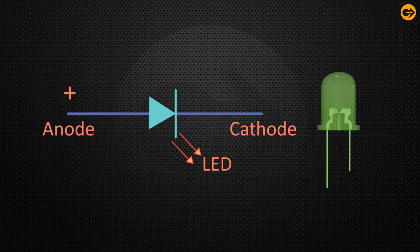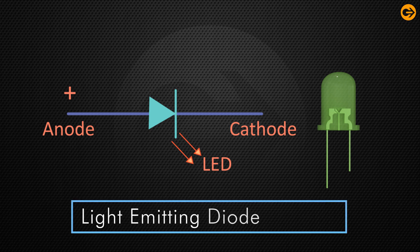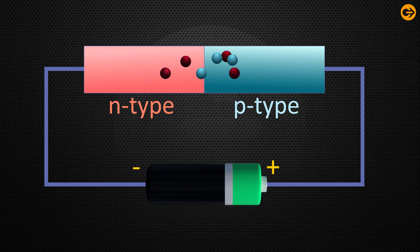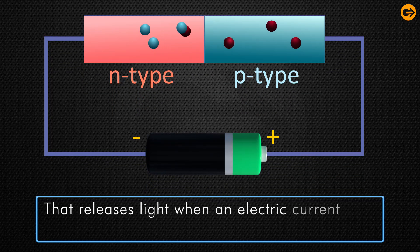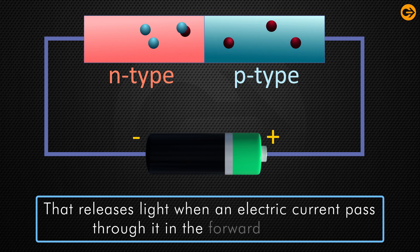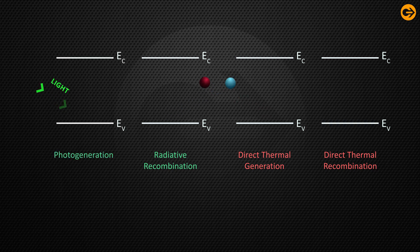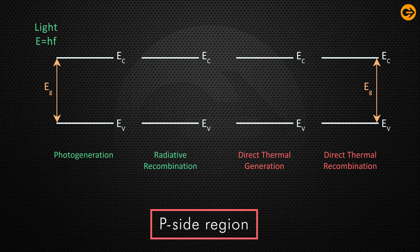A light emitting diode, or LED, is a PN junction diode that releases light when an electric current passes through it in the forward direction. In this device, recombination of charge carriers takes place. An electron from the n-side region and a hole from the p-side region are combined and give energy in the form of heat and light.